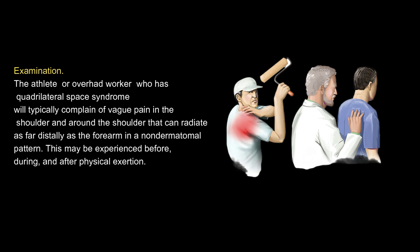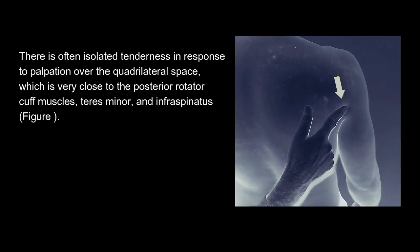The athlete or overhead worker who has Quadrilateral Space Syndrome will typically complain of vague pain in and around the shoulder that can radiate as far distally as the forearm in a non-dermatomal pattern. This may be experienced before, during, and after physical exertion. There is often isolated tenderness in response to palpation over the quadrilateral space, which is very close to the posterior rotator cuff muscles, teres minor and infraspinatus.